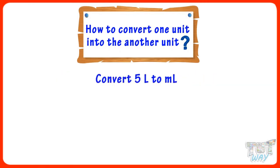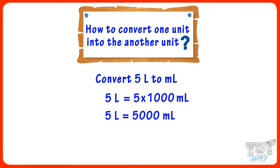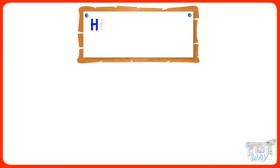5 liters is equal to how many milliliters? 5 liters equals 5 multiplied by 1000, which equals 5000 milliliters. So 5 liters equals 5000 milliliters.